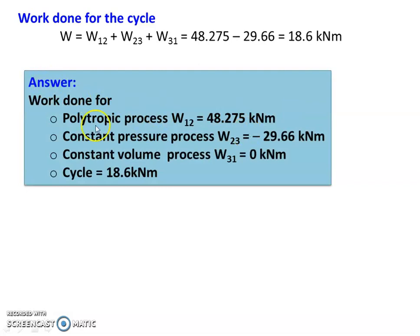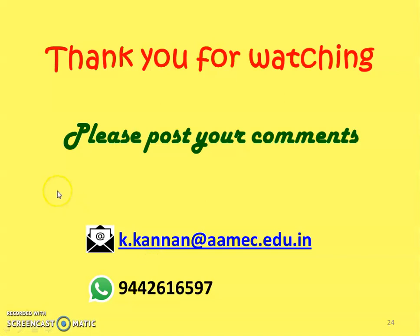The answer for the problem: work done for the polytropic process is 48.275 kNm; work done for the constant pressure process is minus 29.66 kNm; work done for the constant volume process is 0; work done for the entire cycle is W12 plus W23 plus W31 equal to 48.275 minus 29.66 equal to 18.6 kNm. We stop here. Thank you for watching. Please post your comments in the comments box. You can contact me for any clarification on the subject. We will meet again in another video lecture in thermodynamics. Until then, bye.